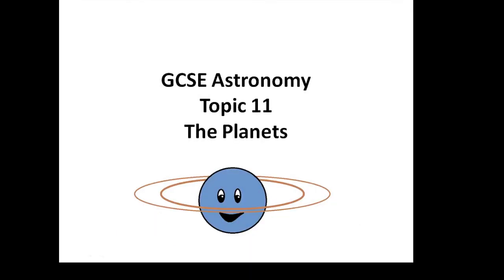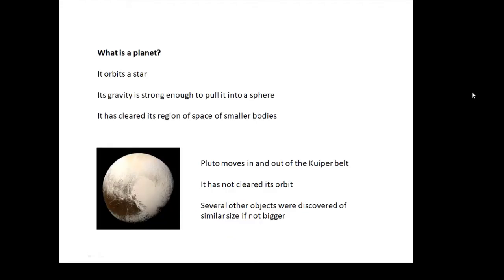GCSE astronomy topic 11: the planets. What is a planet? There are three conditions to be a planet. If an object orbits a star, if its gravity is strong enough—in other words if its mass is big enough to pull itself into a sphere—and if it has cleared its region of space of smaller bodies.